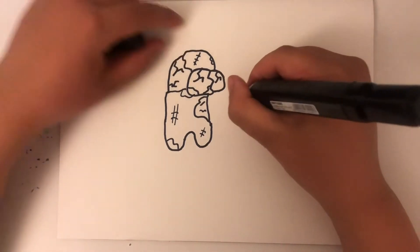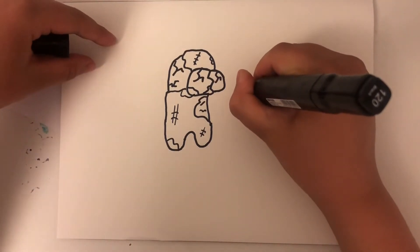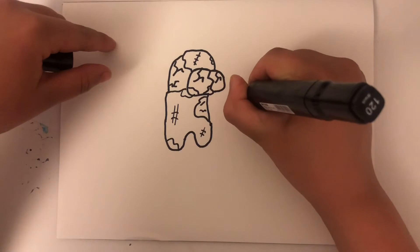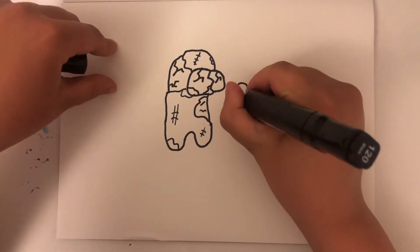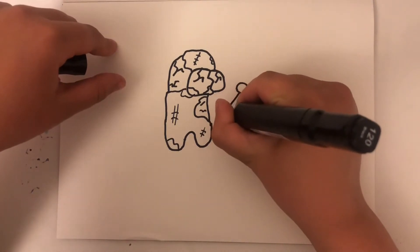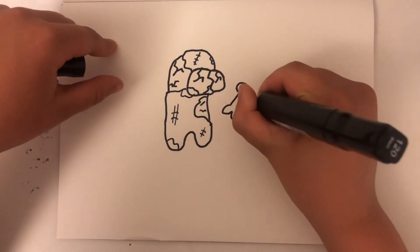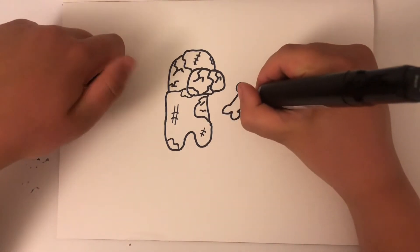Then you can draw his hand holding a bone. Like this. And you can draw his other fingers.